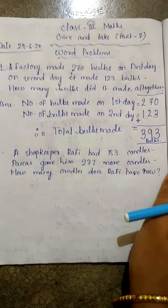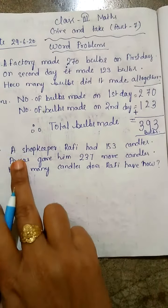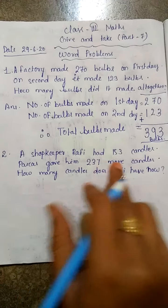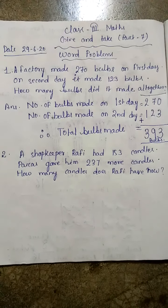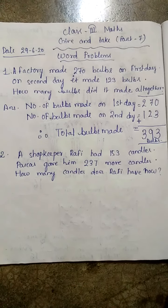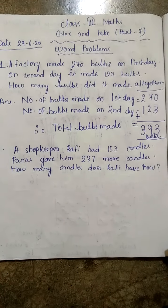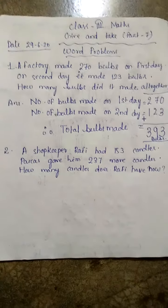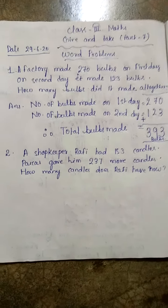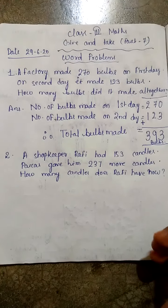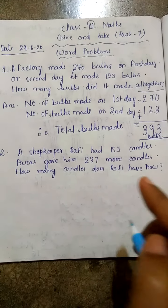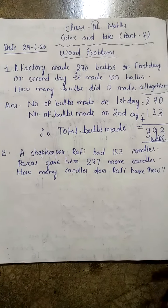ठीक है, अभी दूसरे question में पढ़ते हैं। Shopkeeper Rafi had 153 candles. Paras gave him 237 more candles. Paras उसको 237 और ज्यादा candles दिया। How many candles does Rafi have now? अब उसके पास कितने candles हैं?